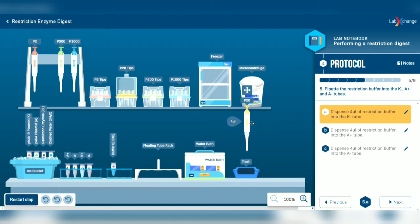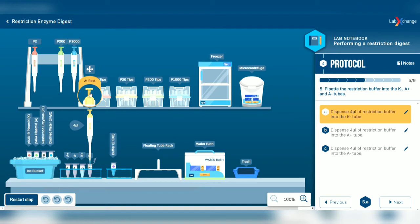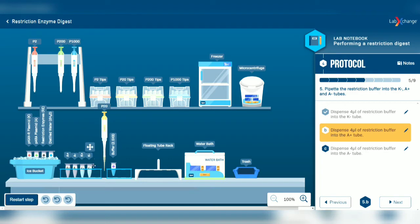Open the tips box and pick a new tip. Now dispense 4 microliters of restriction buffer into the K-minus tube. Open the K-minus tube and transfer the buffer into it. Close it and eject the tip.